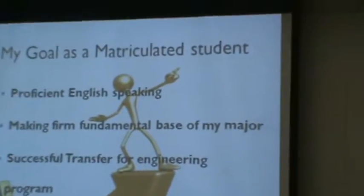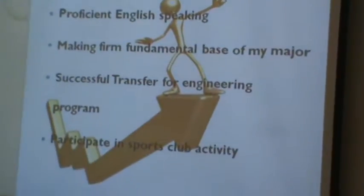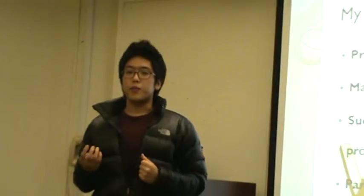I want to talk about my role as a matriculated student. First, I'm going to get proficient English speaking within two years. I applied for an engineering program and my wish number is 2.3. I'm supposed to transfer to another university after two years, so I decided to get proficient English speaking before I transfer.